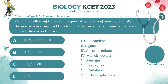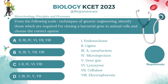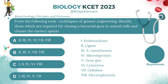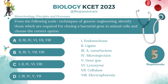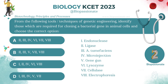From the following tools or techniques of genetic engineering, identify those which are required for cloning a bacterial gene in animal cells and choose the correct option. Answer: Option C.